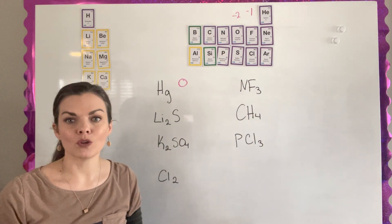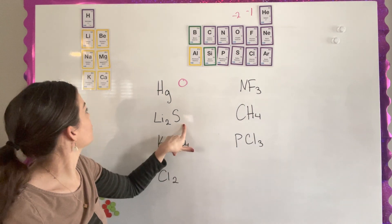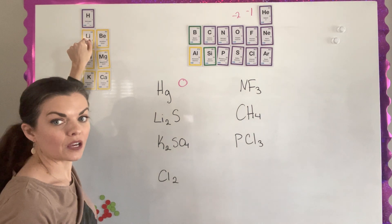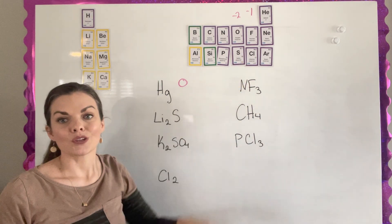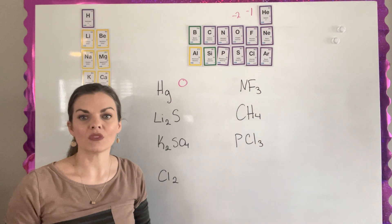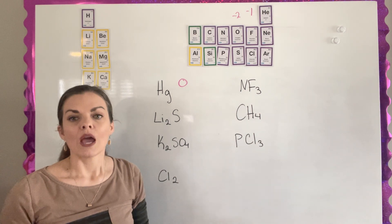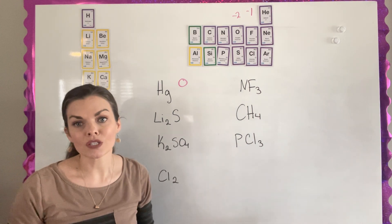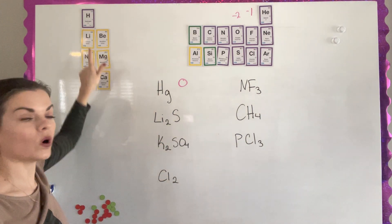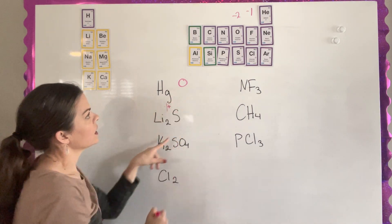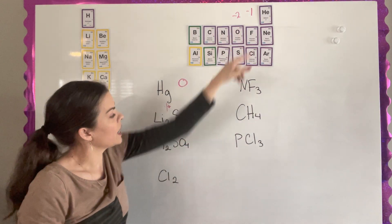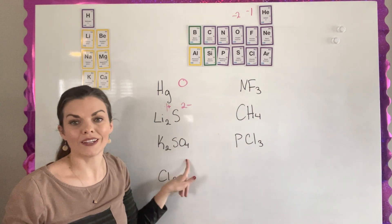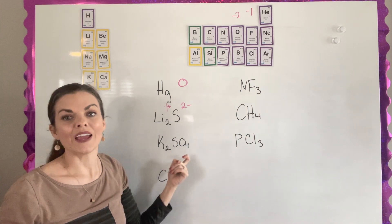The next compound is lithium sulfide. It has a metal, lithium, and a non-metal, sulfur, so it is an ionic compound. Remember: for an ionic compound, the oxidation state is just the charges of the ions. Lithium is in group 1, so it has a charge of one plus, and sulfur has a charge of two minus.